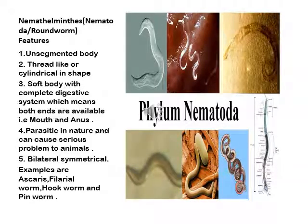We are going to discuss Phylum Nematoda, also known as roundworms. As you can see in the pictures, different types of nematodes exist. Their body is unsegmented, meaning it is not divided into parts. They are thread-like or cylindrical in shape. They have a soft body with a complete digestive system, meaning they have a mouth to intake food and an anus to excrete.